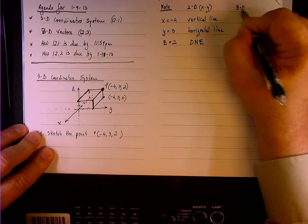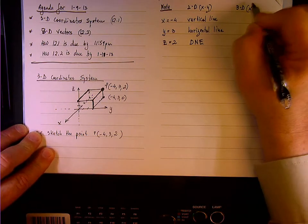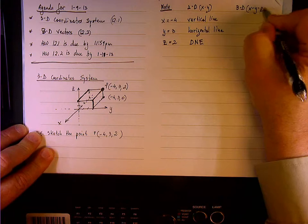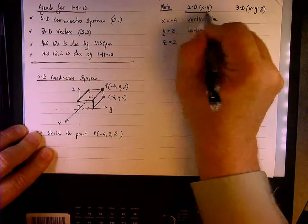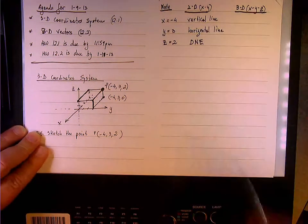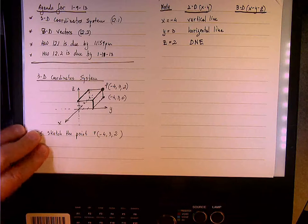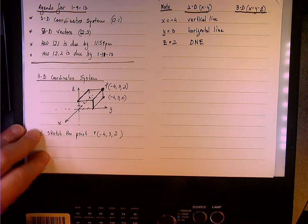On the other hand, when we are moving to a three-dimensional universe, where we have x, y, z, then we have a whole new meaning to the notation x equals negative 4. x equals negative 4, in this case, becomes a plane.